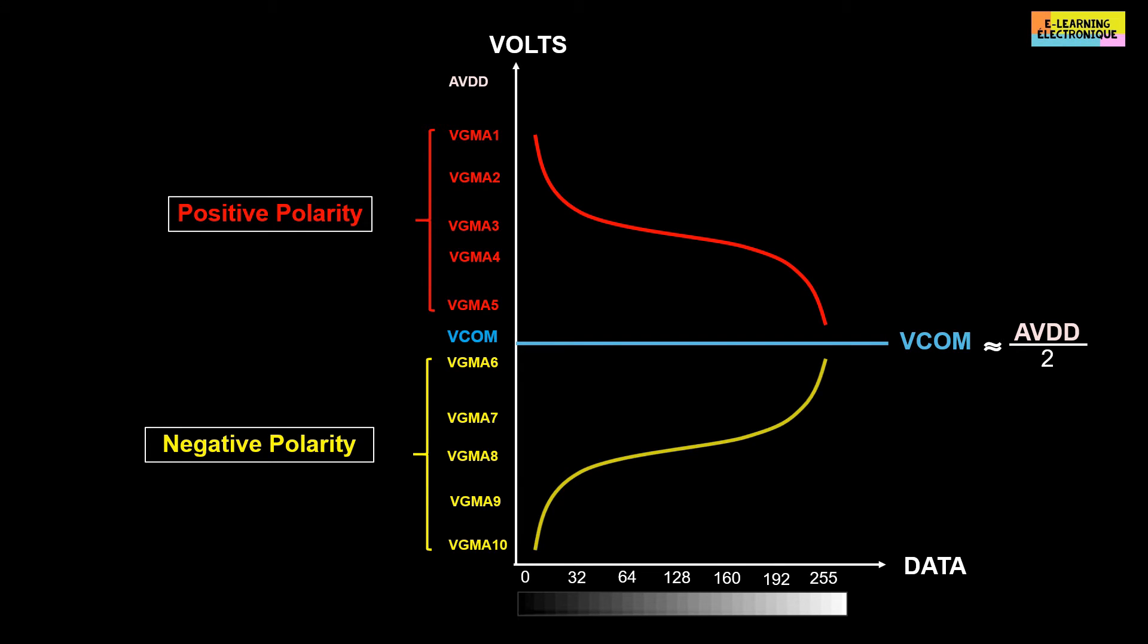For example, on this graph gamma number 4, which is above the V com and therefore has a positive polarity, corresponds to 192 on the grayscale. The gamma number 7 is under the V com thus with negative polarity also corresponds to the value 192 on the scale of the gray level. The change of the polarity of the pixels can be done in several ways.